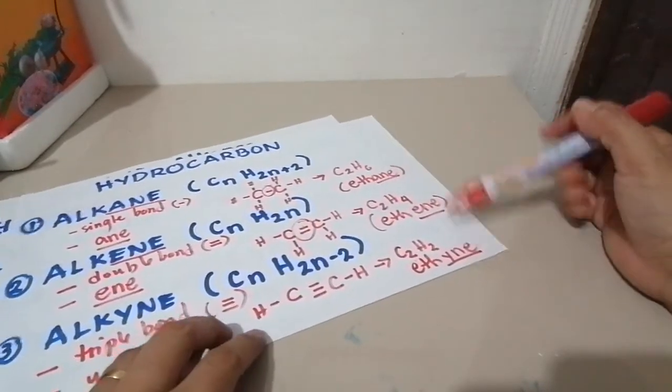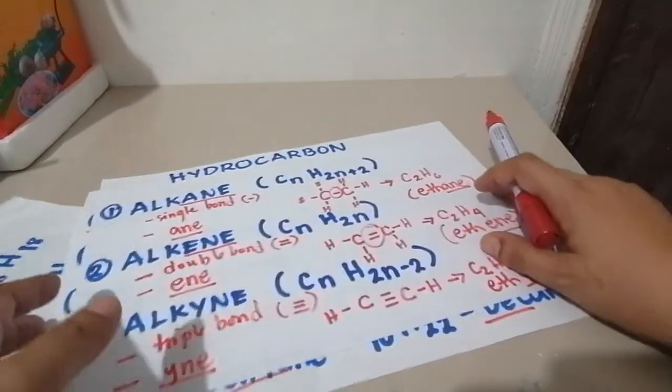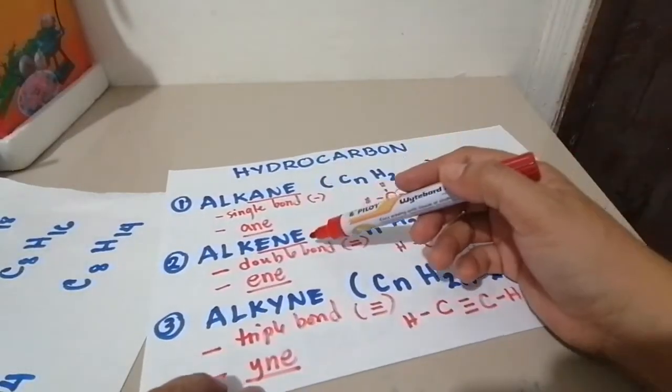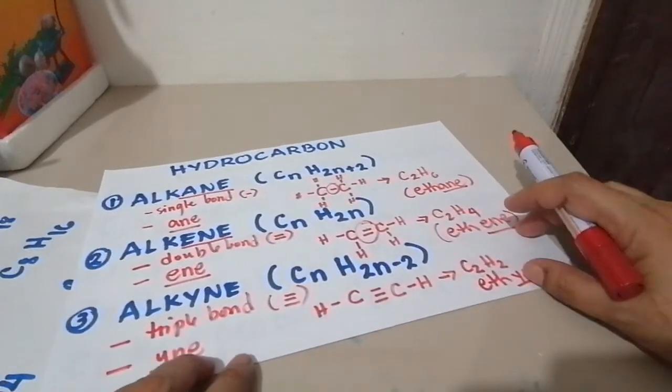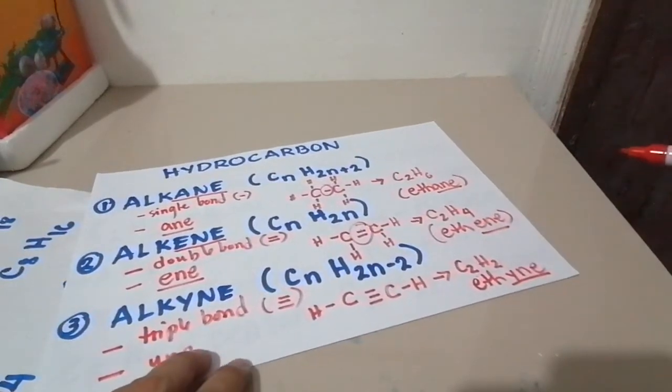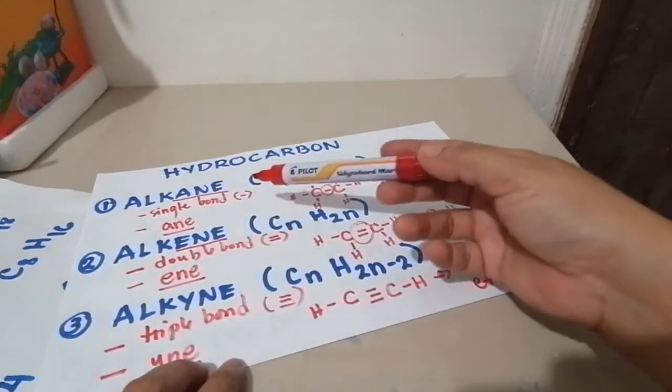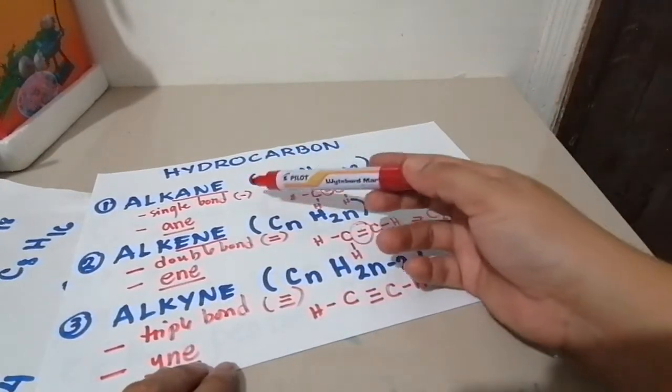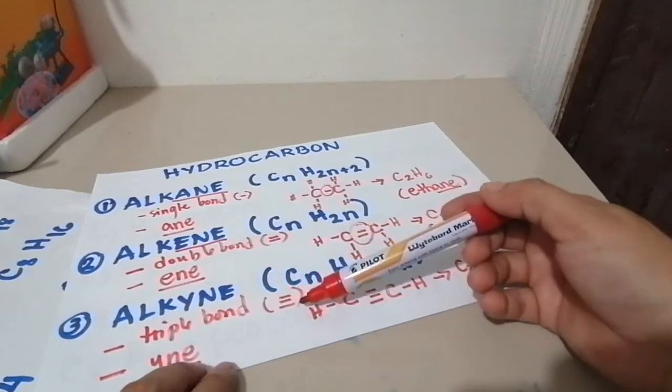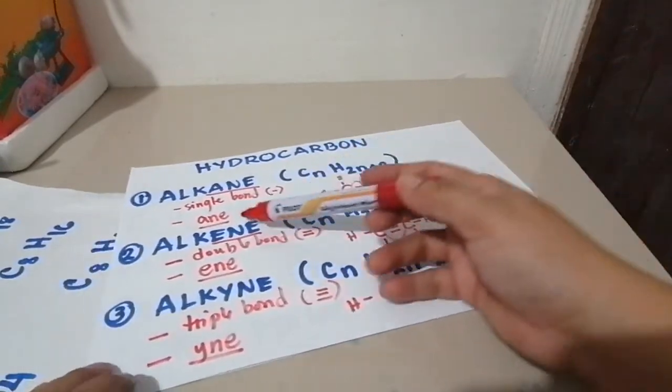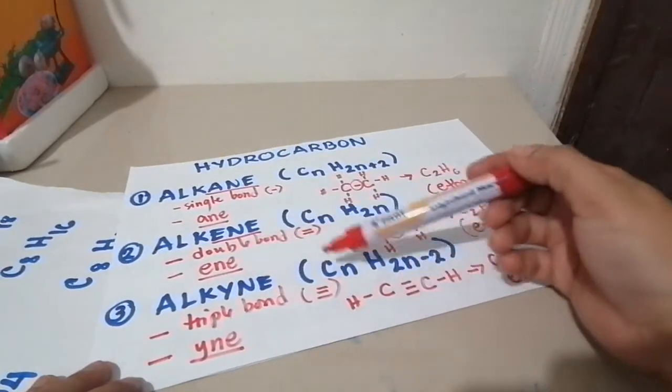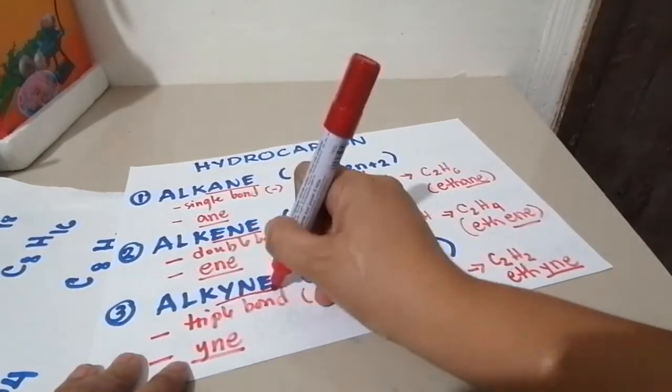That is the difference between the three, these are the differences of the alkane, alkene, and alkynes when we name them. The difference is: the other one is double, this is single, double, and triple. And then also the suffixes that we use: for alkane we use -ane, alkene we use -ene, and for alkyne we use -yne.